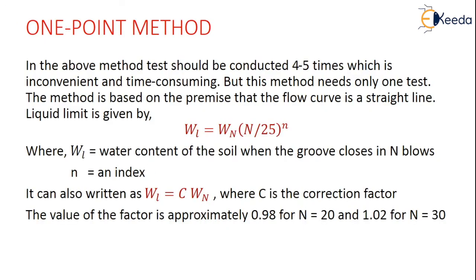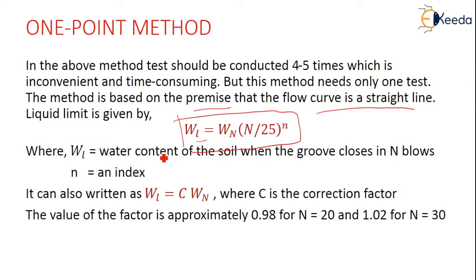The next method is the one-point method. In the above method, tests should be conducted 4 to 5 times, which is inconvenient and time-consuming, but this method needs only one test. It is based on the premise that the flow curve is a straight line. The liquid limit is given by: WL = WN × (N/24)^N. This can also be written as WL = C × WN, where C is a correction factor — approximately 0.98 for N = 20 and 1.02 for N = 30.